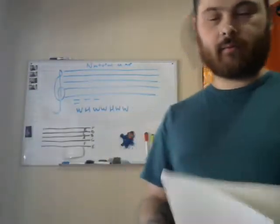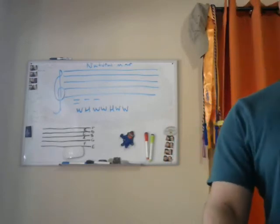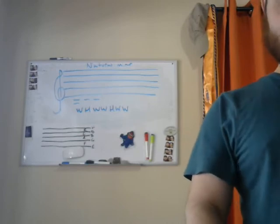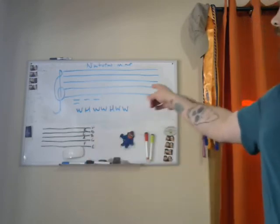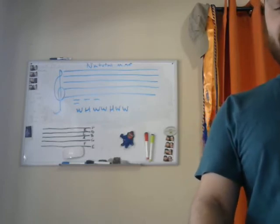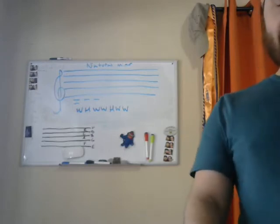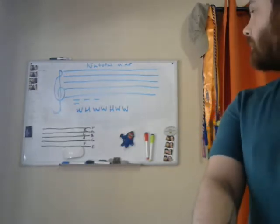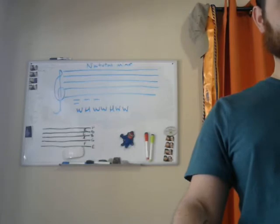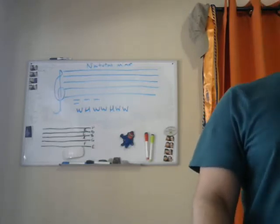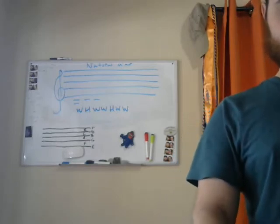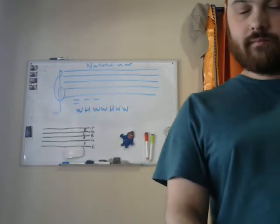So the formula we're going to use for this is: A to B is a whole step, B to C is a half step, C to D is a whole step, D to E is a whole step, E to F is a half step, F to G is a whole step, and G to A is a whole step. And it sounds like this — play it up in a higher octave.